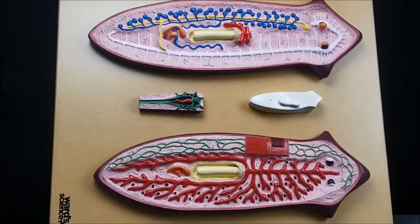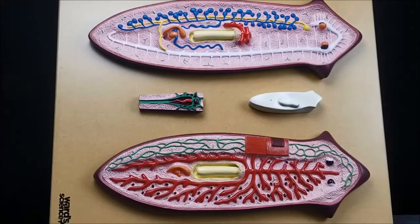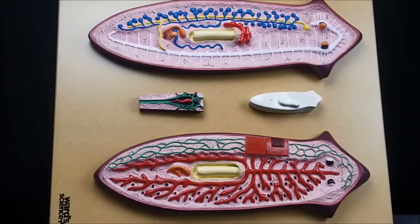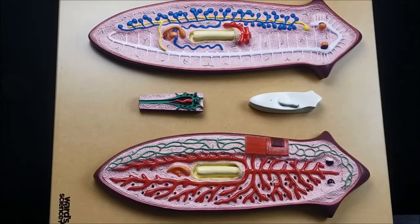Here we have our planaria model. This is kingdom Animalia, phylum Platyhelminthes, class Turbellaria. Going over this model for zoology, Biology 182 here at Golden West College in Huntington Beach, California.